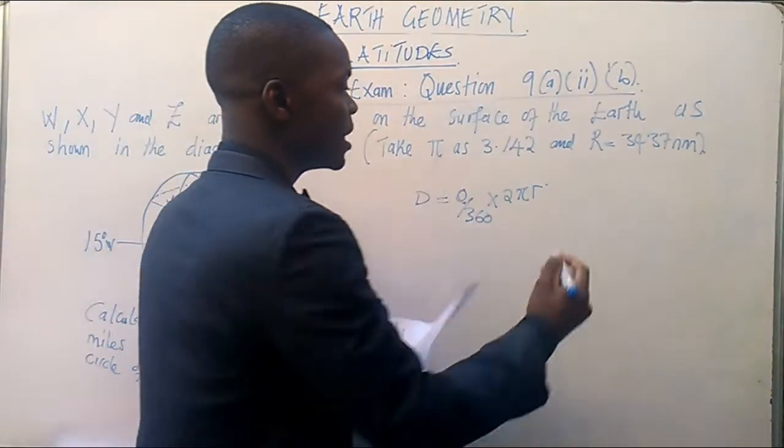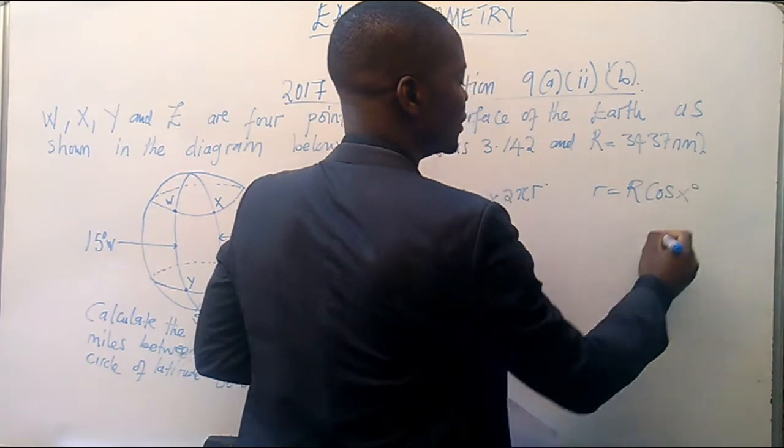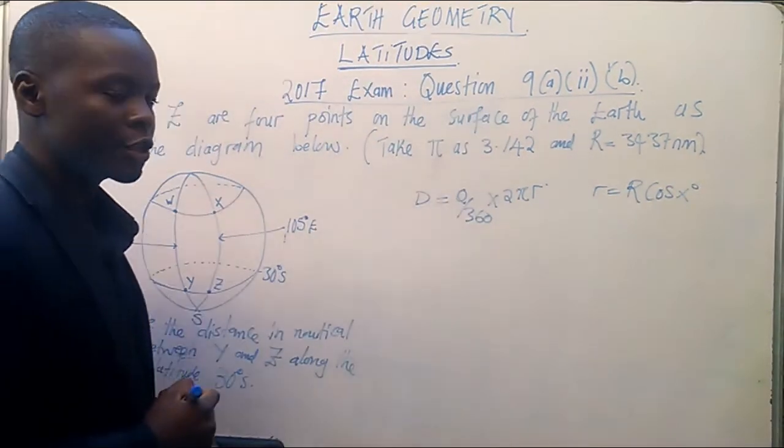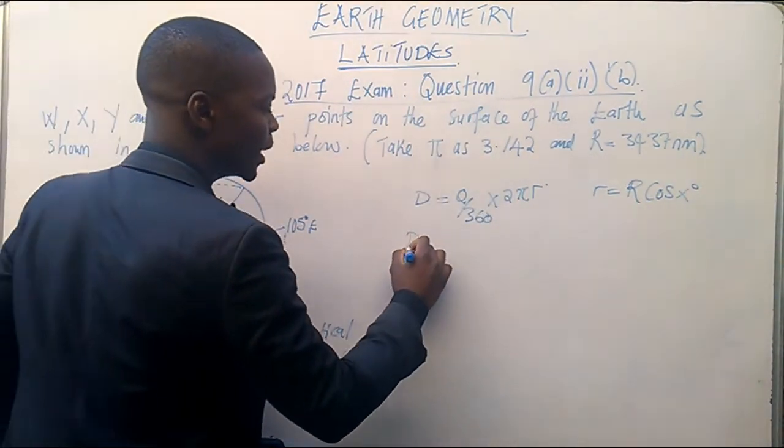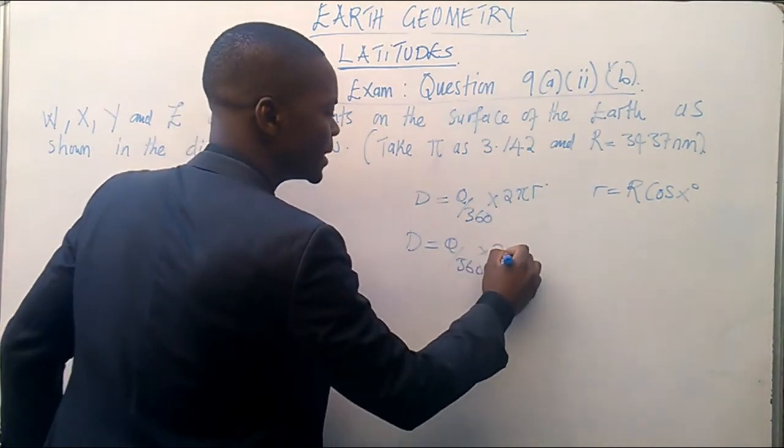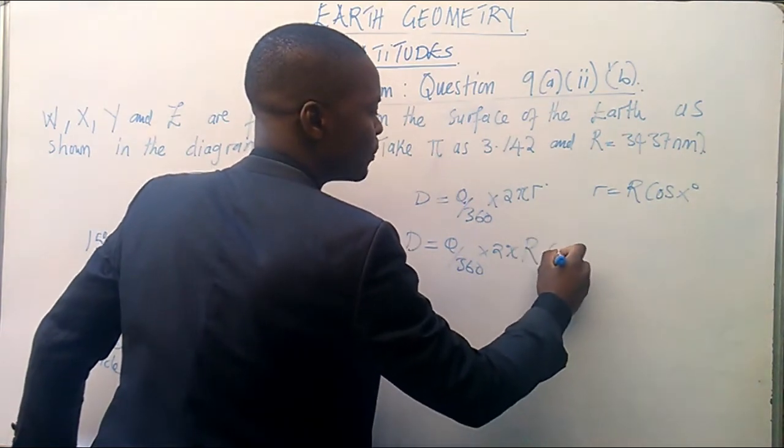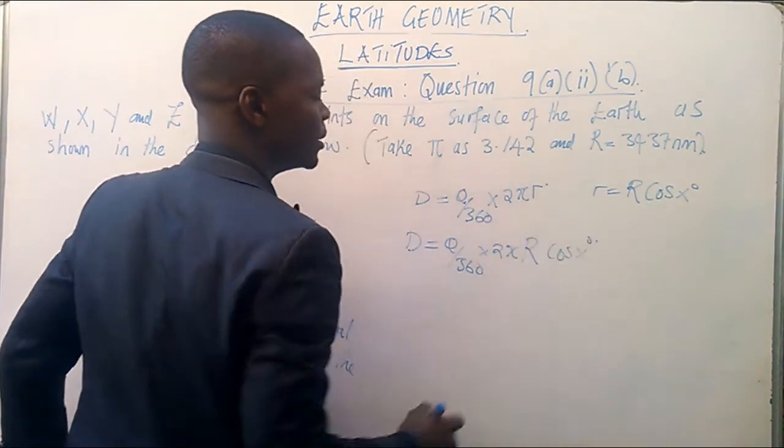Therefore, we know that this small r is the same as R cos x degrees. Capture the R cos x degrees. So this simply means that we can substitute the value of this small r by saying that this small r is substituted with the capital R cos x degrees.